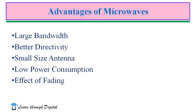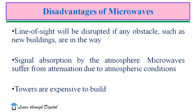Next, we will discuss the advantages of microwaves. First is the larger bandwidth — we can send more information within that range compared to other frequency ranges. It also provides better directivity, a reduced antenna size, low power consumption, and reduced effect of fading. However, it has disadvantages: line of sight is disrupted by obstacles such as buildings; signal absorption by the atmosphere causes attenuation depending on atmospheric conditions; and microwave towers are expensive to build.